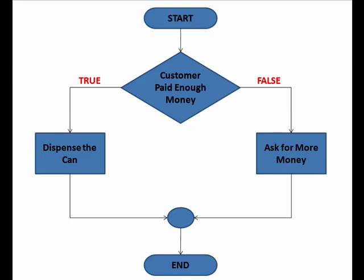If we think of that as programming logic, we have a logical starting point. The diamond you see on the screen includes within it a condition, phrased here as a declarative sentence: 'Customer paid enough money.' A condition has one of two possible values — it's either true or it's false. It cannot be both at the same time.